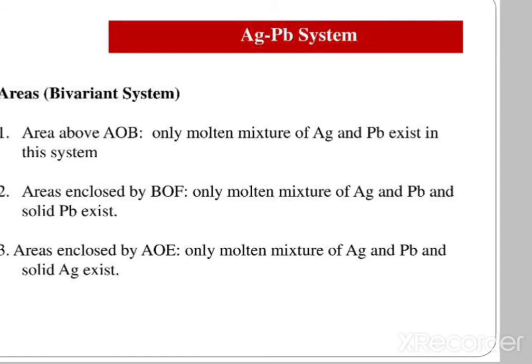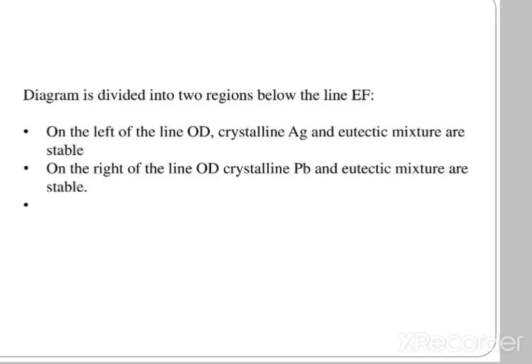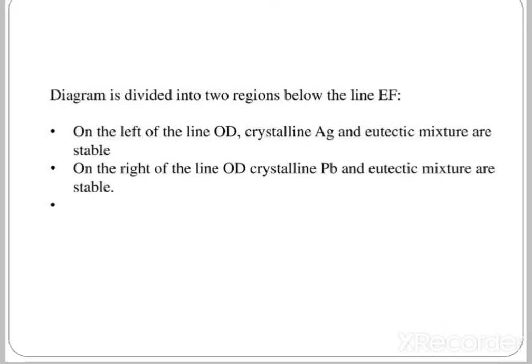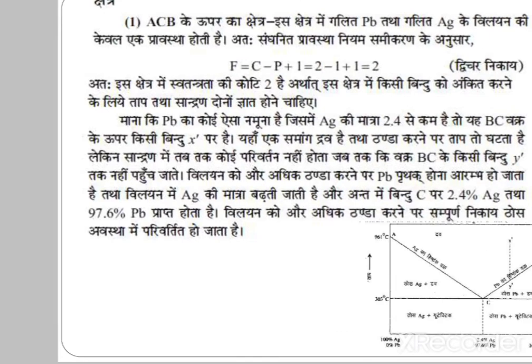Areas in the diagram: the area enclosed by ACB above both curves — only molten mixture of silver and lead exists. The area enclosed by BOE — molten mixture of silver and lead plus solid lead exists. The area enclosed by AOE — molten mixture of silver and lead plus solid silver exists. Below the eutectic line, on the left side — crystalline silver and eutectic mixture are stable; on the right side — crystalline lead and eutectic mixture are stable.